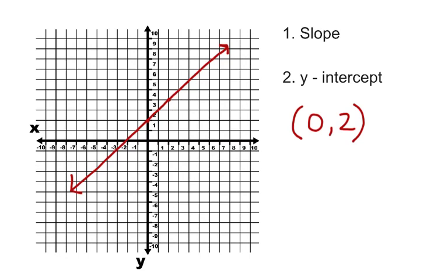Now what about the slope? Let's start at the point where it crosses the y-axis. We go up 2 and over 2. Two over 2 simplifies to 1, so our slope is 1.